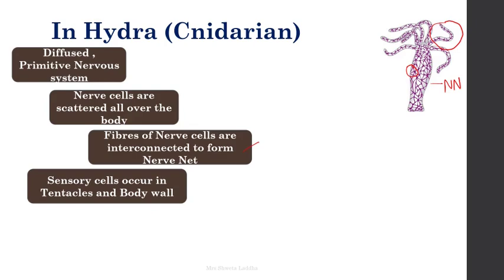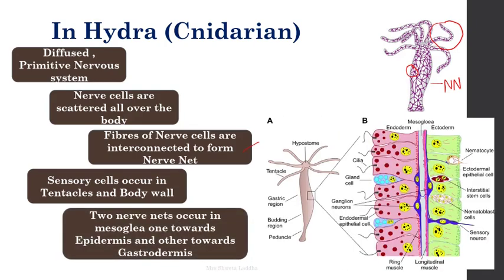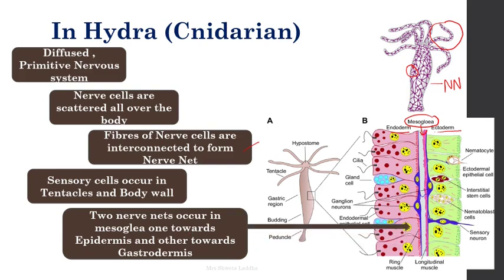Sensory cells are present especially in the tentacle region or the body wall, and they can respond to stimuli. Two nerve nets occur in the mesoglia — the region between the ectoderm and endoderm. One nerve net grows towards the ectoderm, shown by blue-colored cells towards the epidermis, and another grows towards the endoderm.